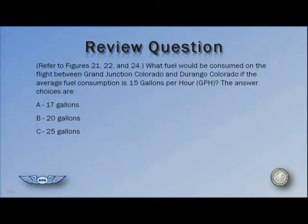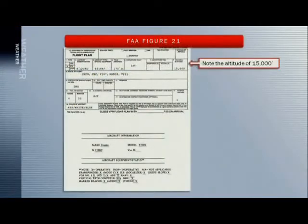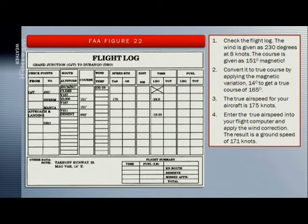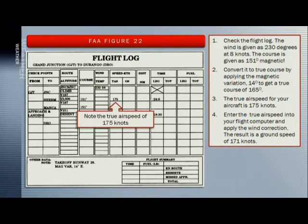The answer is one of these three. We have to go first to figure 21, which establishes our altitude of 15,000 feet. We go to figure 22, our flight log, and check the flight log. The wind is given as 230 degrees at 8 knots. The course is given as 151 degrees magnetic. Convert it to true course by applying the magnetic variation of 14 degrees to get a true course of 165. The true airspeed for your aircraft, as shown here, is 175 knots. Enter the true airspeed into your flight computer and apply the wind correction. The result is a ground speed of 171 knots.